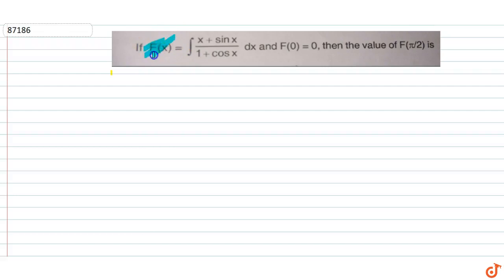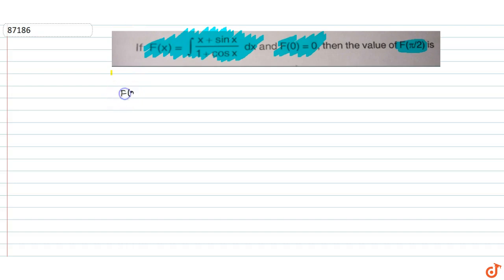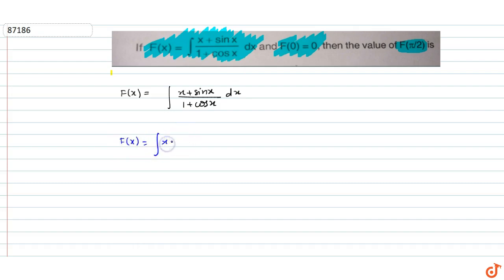The question given is: if f(x) is equal to the integral of (x + sin x)/(1 + cos x) dx, and f(0) is equal to 0, then we have to find the value of f(π/2). So we have f(x) equal to the integral of (x + sin x)/(1 + cos x) dx.